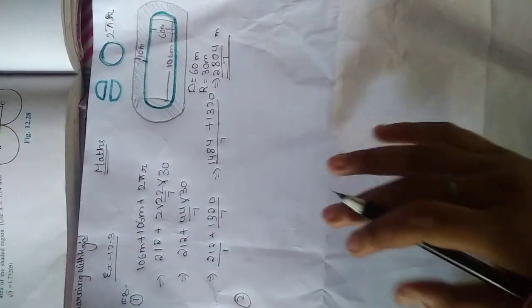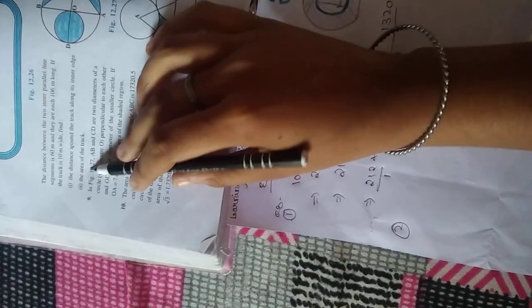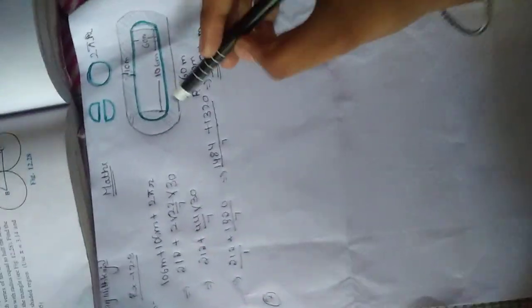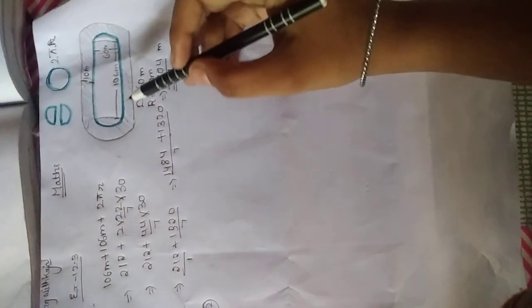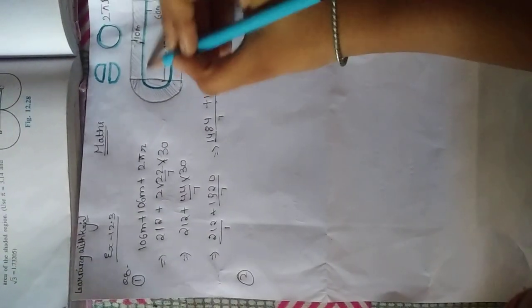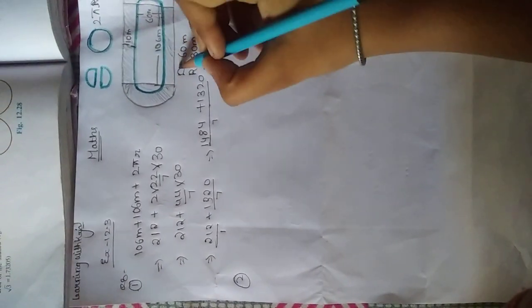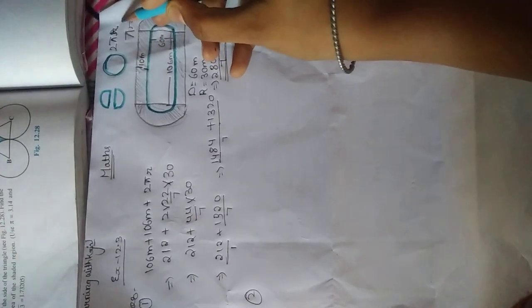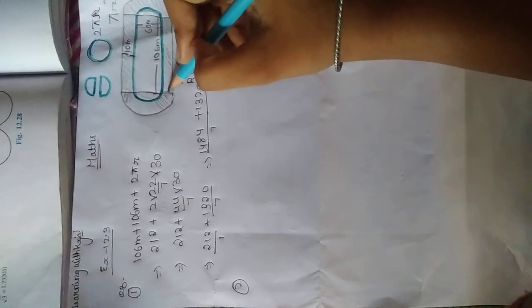Let's start question number second: what is given? The area of track. We find the area of track, means this shaded region we find. We will see there is a rectangular formed, and here also is rectangular. When both semicircles are added, take one circle area of circle πr² and area of rectangle.